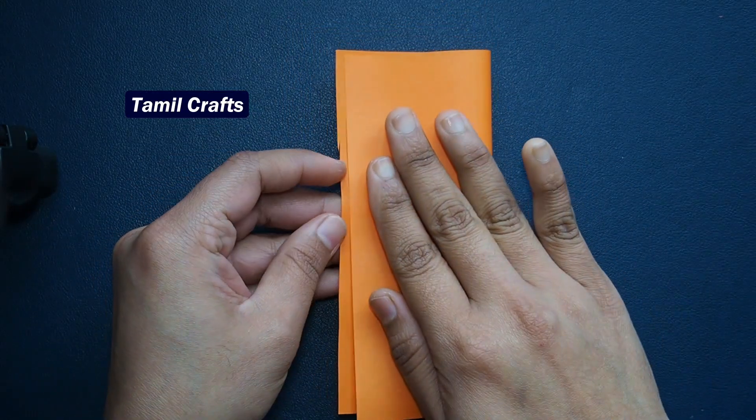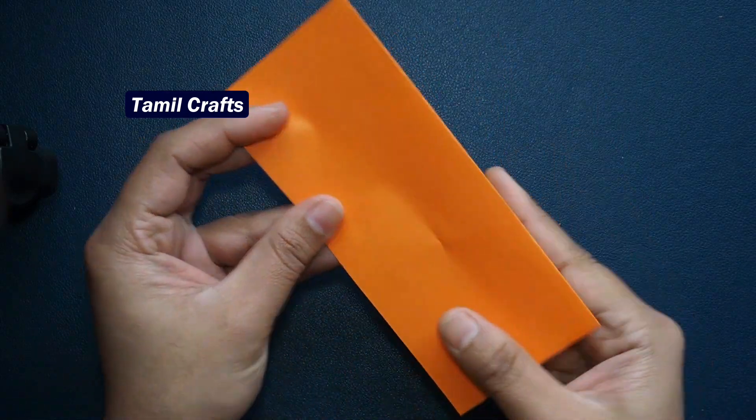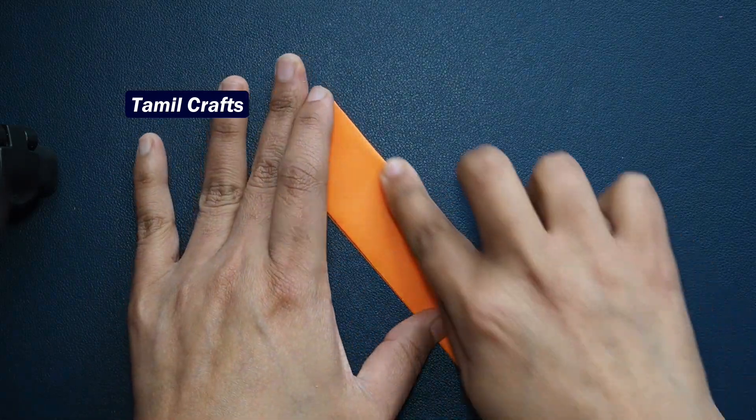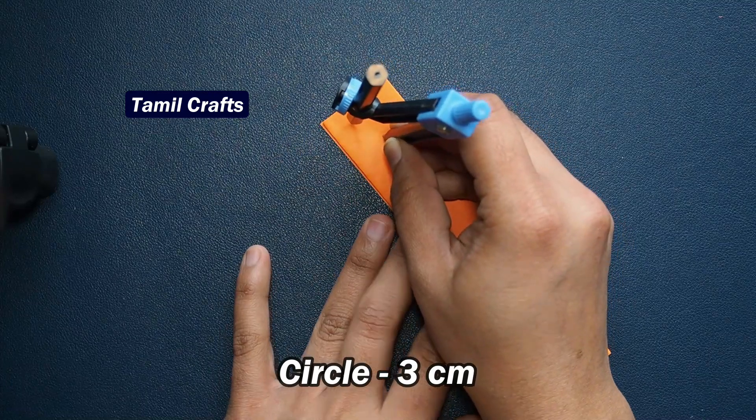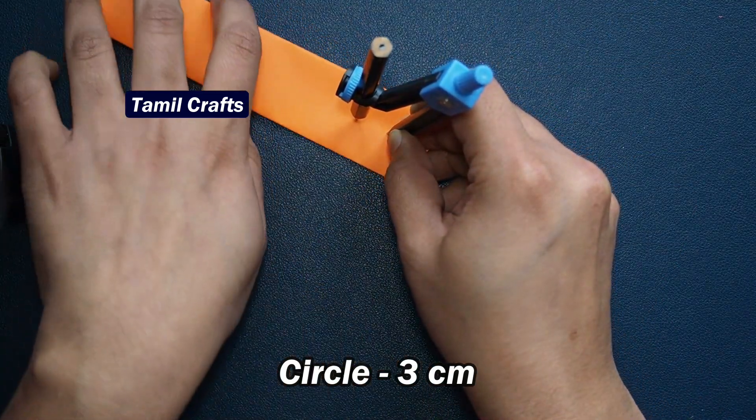First, take any color paper. Fold it and cut the two sides. We will make circles in a 3cm diameter.